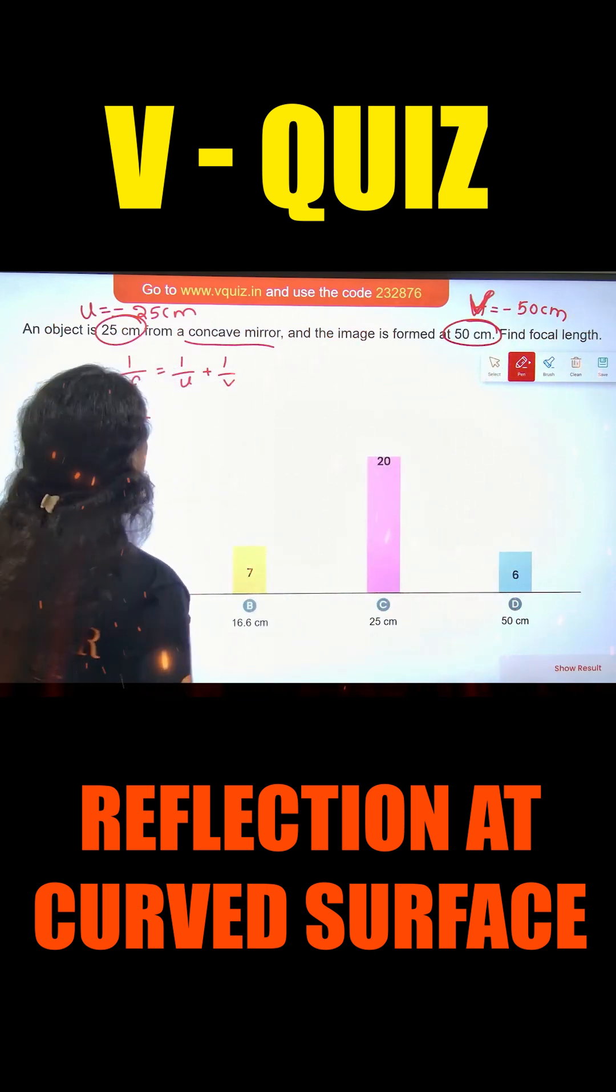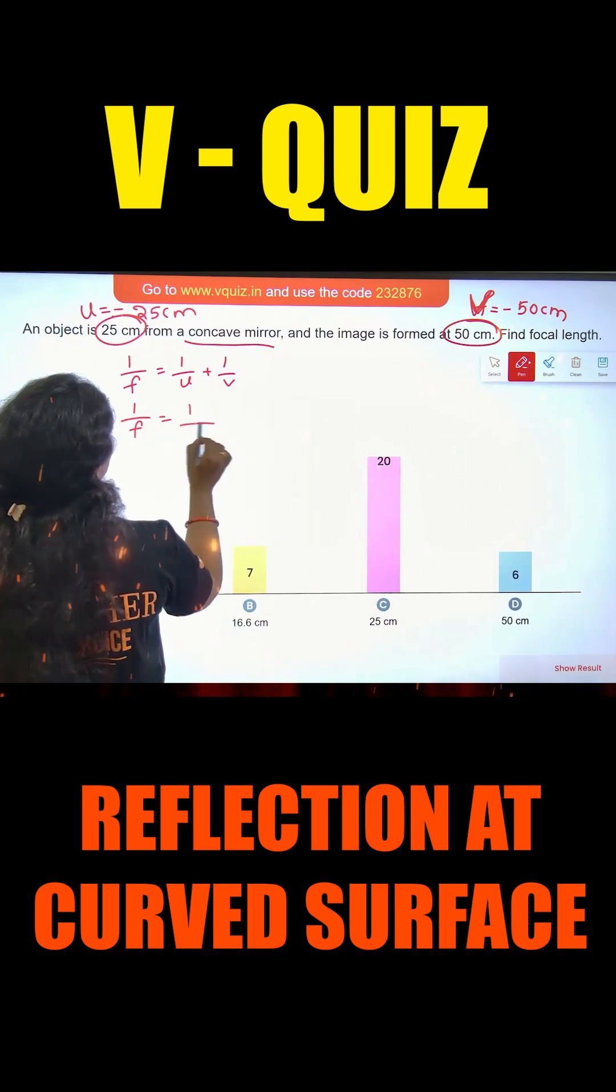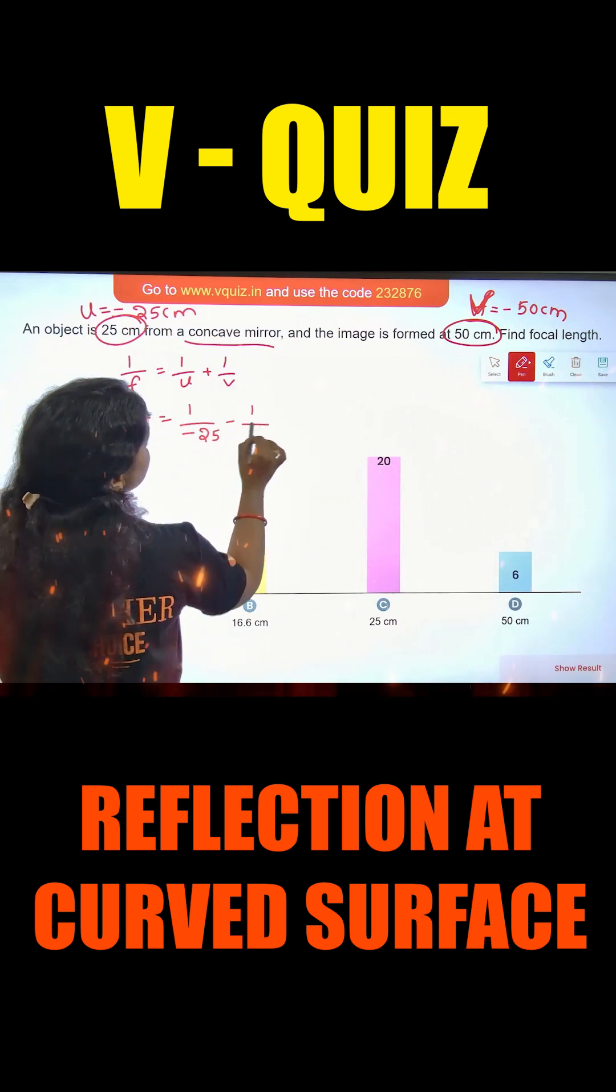Here is focal length, find the focal length. So 1 by F is equal to 1 by U, that's minus 25, and V is minus 50.